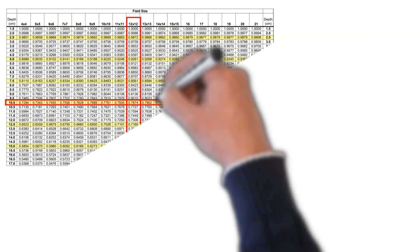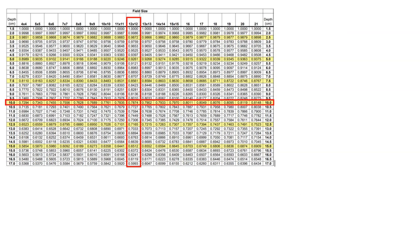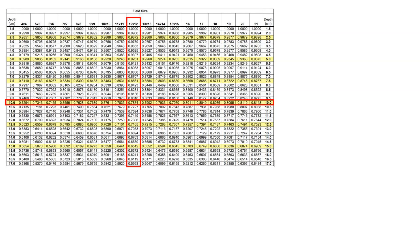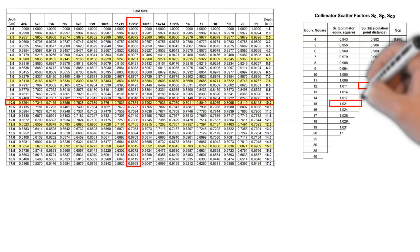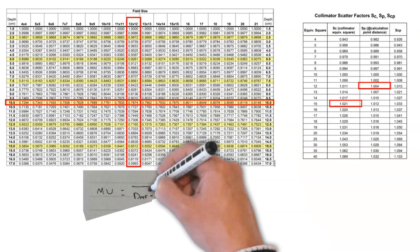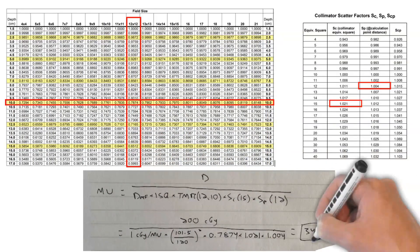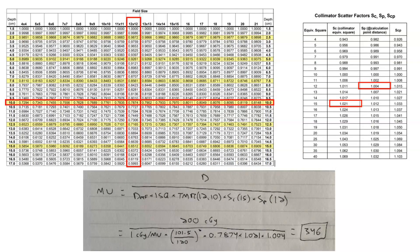And now we can go to the beam data. So this is the TMR table. We find our field size of 12 by 12 at a depth of 10. The TMR value is 0.7874. We can do the same for the collimator and phantom scatter factors. For collimator, it's 15, which is the same as the PDD formalism. And then for the phantom scatter, it's 12 because it's at the depth of the calculation point. And then we can plug everything into the equation.